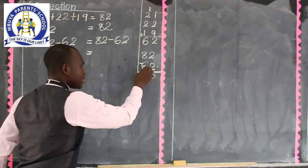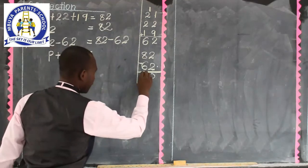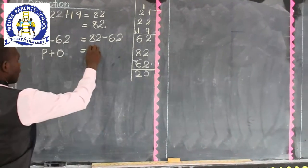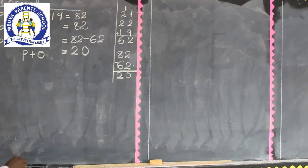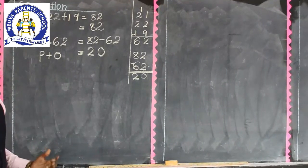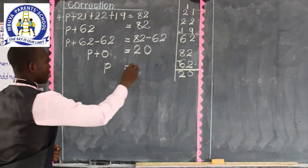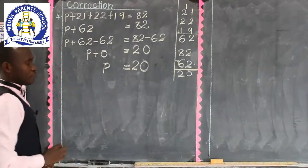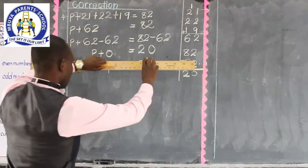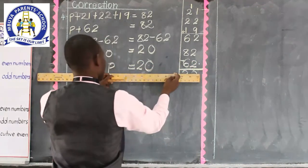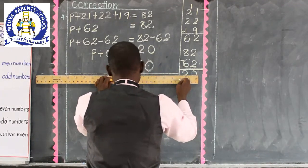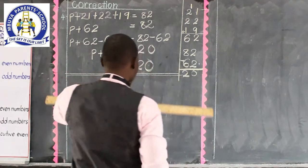Carry out the side work: 82 minus 62. This is 2 take away 2, the result is 0. Then 8 minus 6, we remain with 2. Therefore the difference between 82 and 62 is 20. So we are having P equals 20. After getting this answer, get a ruler and underline neatly. In order to become a mathematician, you must be good at organizing your work and putting neatness at the forefront.